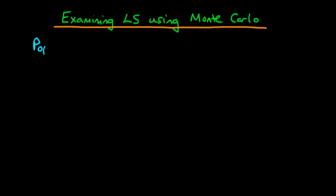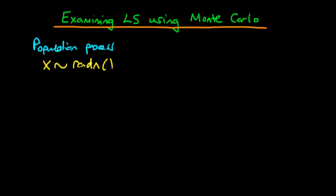The idea here, just to reiterate what I said in the last video, is that we're going to define some sort of population process. What we're going to do explicitly is, first of all, generate some x variables — our independent variables — using the RANDN function of MATLAB, which generates normal random variables x.